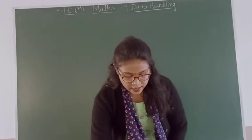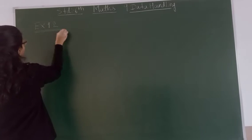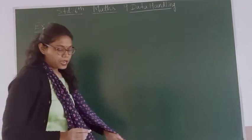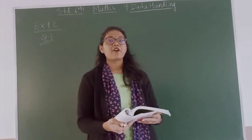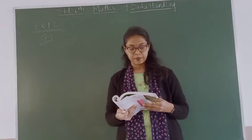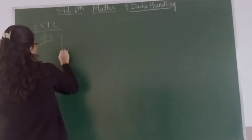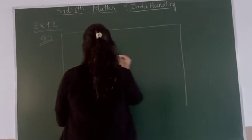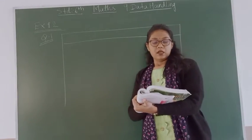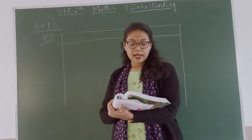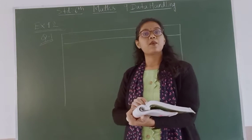So let's start exercise 9.2. There are only 2 questions in exercise 9.2. The first is: total number of animals in 5 villages are as follows. There are 5 villages from A to E, so let's make a table for this. Village A has 80, village B 120, village C 90, village D 40, and village E 60.